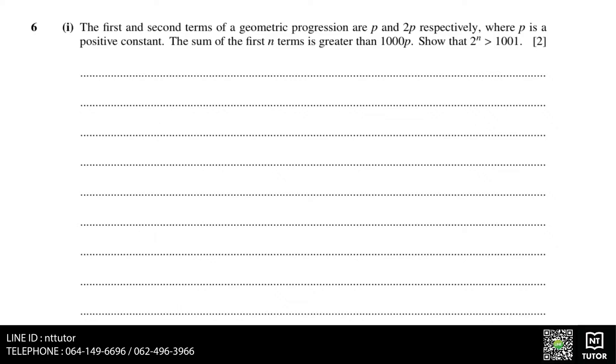This means that we need to write an expression in terms of n and then simplify it so that it becomes 2 to the power of n is greater than 1001. If we look at the main piece of information, the sum of the first n terms is greater than 1000p.